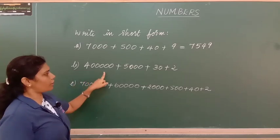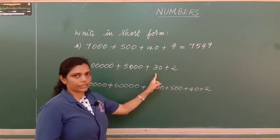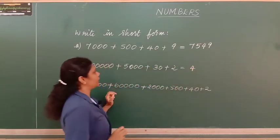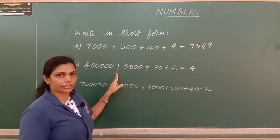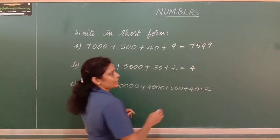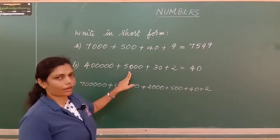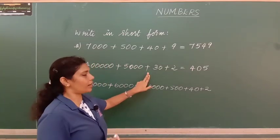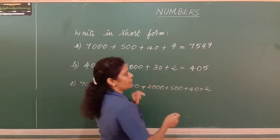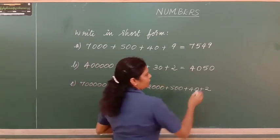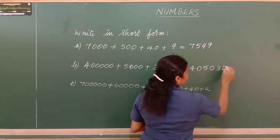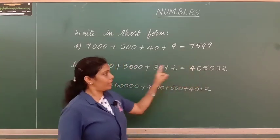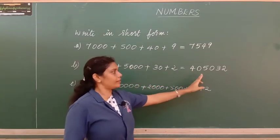In problem B we have 4 lakh + 5,000 + 30 + 2. Starting from the left, 4 goes in the lakhs place. There is nothing in the ten thousands place, so we put a 0. In thousands place we have 5,000, so we write 5. There is no hundreds, so we write 0. In tens place we have 30 and in ones we have 2. So the number is 4,05,032.